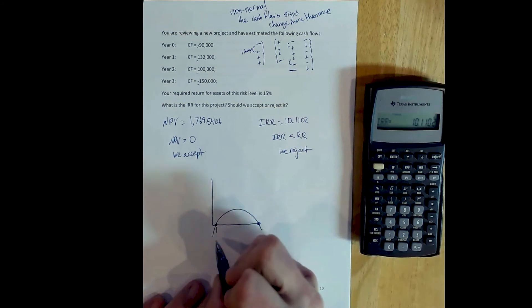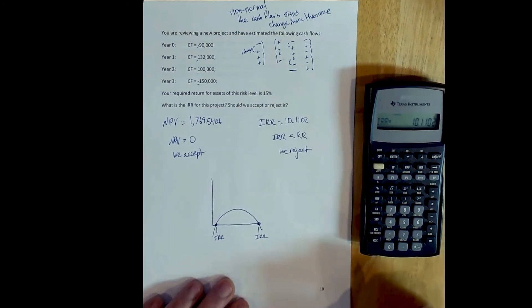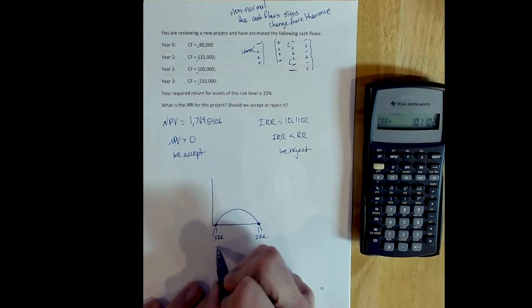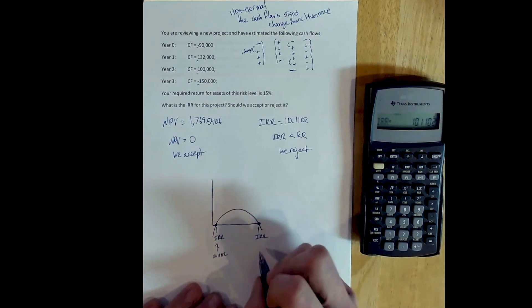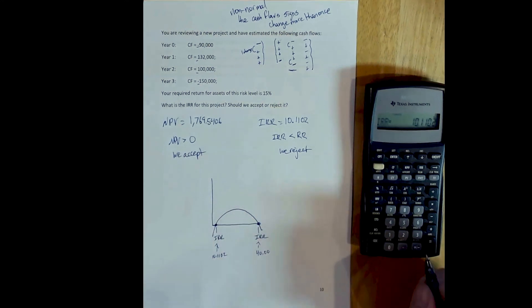And because there are two internal rates of return, there's one here and one here. And that means that the value given to you by the calculator is just this first internal rate of return. And it doesn't give you this second internal rate of return, which is 40-something percent. You can see it in the slides.